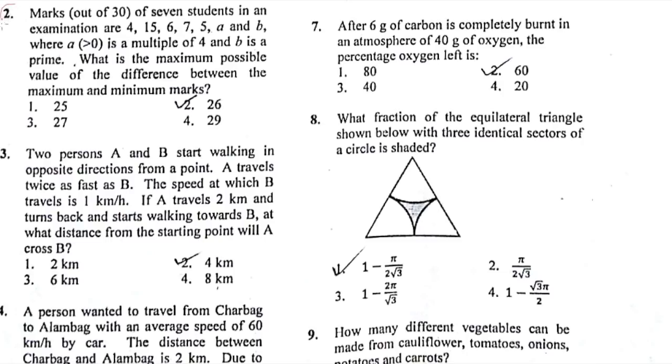This first question says marks out of 30 of students in examinations are 4, 5, 6, 7, 5, A and B, where A is greater than zero and is a multiple of 4. So we can take A as 4 minimum or 28 maximum. B is a prime number, so B could be 2 minimum or 29 maximum. They're asking the maximum possible value of difference between maximum and minimum marks. So the difference is 29 minus 4, which gives 26. I feel 26 is the correct answer.